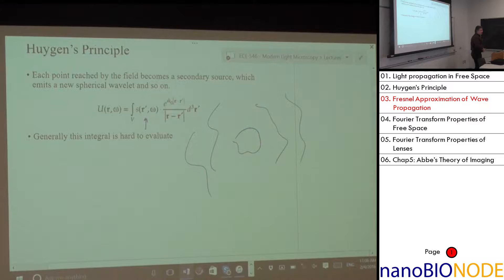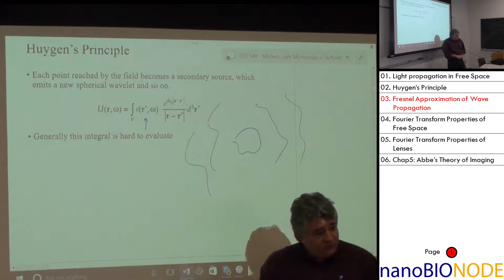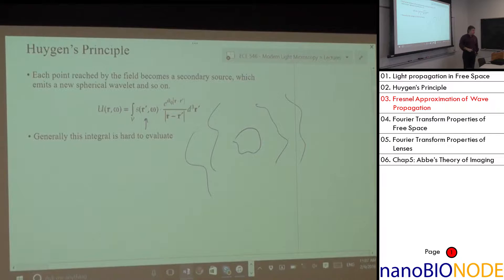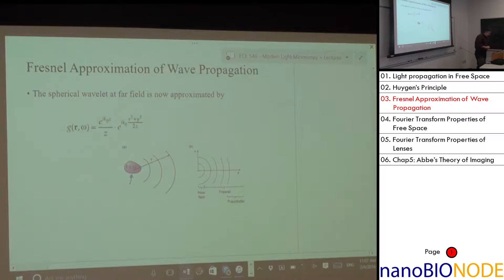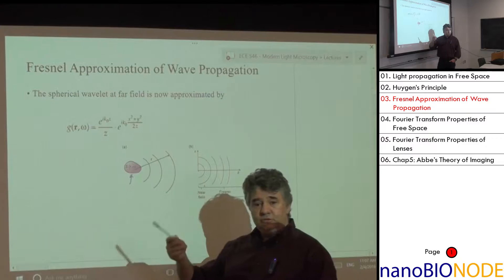It's like a very wrinkly shirt: as you go farther away, it's as if you blow it up and stretch it — it becomes smoother and smoother. Keeping that in mind helps us approximate the propagation into simpler forms. Fresnel came up with an approximation that takes the spherical wave e^(ikr)/r.